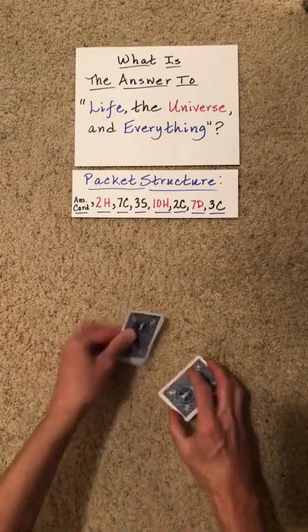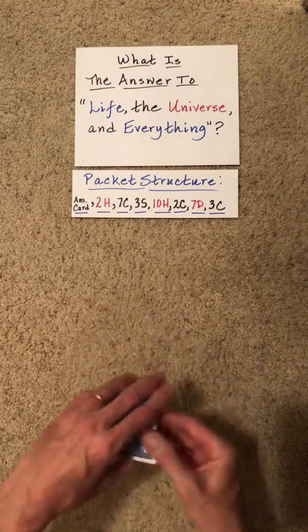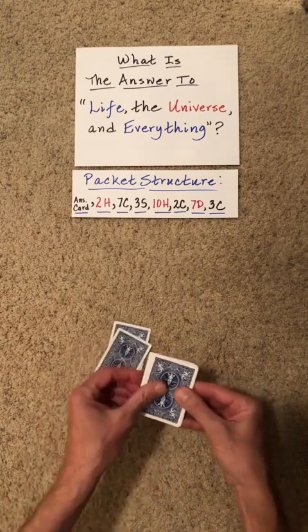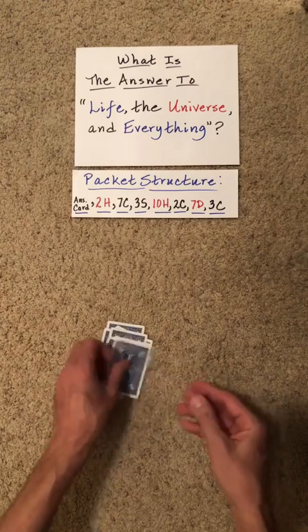Perform one Klondike shuffle. After that, we're going to perform an in-hand gilbert. This is where you can draw from the top or the bottom more than once, and do this as dictated by the spectator.